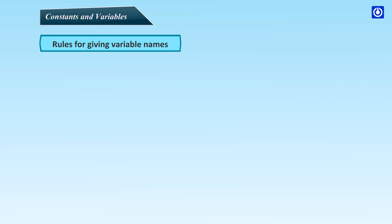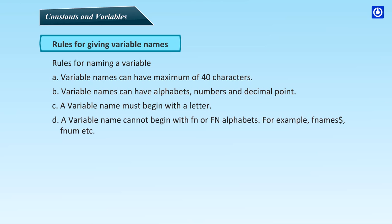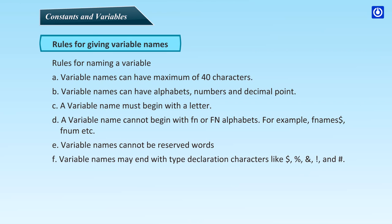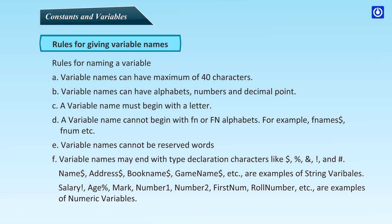How to define variables: QBasic has special symbols for each variable type, but only the string type requires the special symbol $ along with the variable name. The other types represent numbers and the symbols are not compulsory. Rules for naming a variable: variable names can have a maximum of 40 characters; they can include alphabets, numbers, and decimal points; a variable name must begin with a letter; it cannot begin with FN or function alphabets (e.g., FN names, FNumbers); variable names cannot be reserved words; they may end with type declaration characters like $, %, &, !, or #. Examples of string variables: Names$, Address$, Booknames$, Gamenames$. Examples of numeric variables: Salary, Age, Mark, Number1, Number2, Fastnum, Rolenumber.